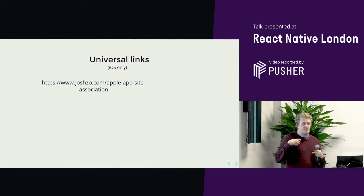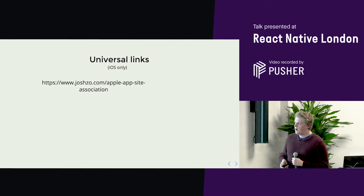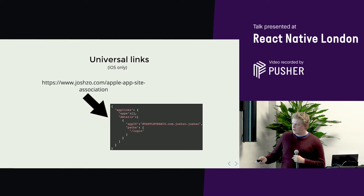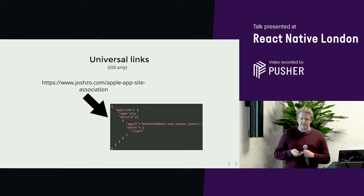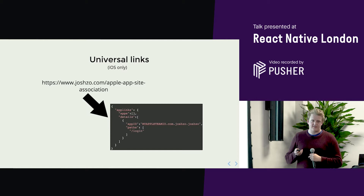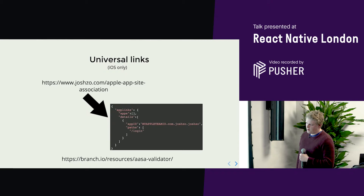If I was going to set up Joshso universal linking, I'd need to set up an Apple site association file. You can actually look at these for any app that has deep linking — for example, reddit.com/.well-known/apple-app-site-association. I'll make the slides and code available on GitHub afterwards. There's also a helpful validator tool by Branch.io which will validate your Apple site association file and verify it's doing exactly what you want.